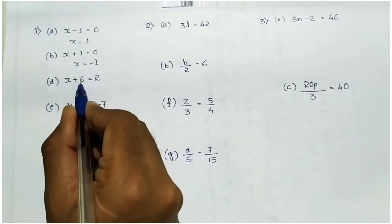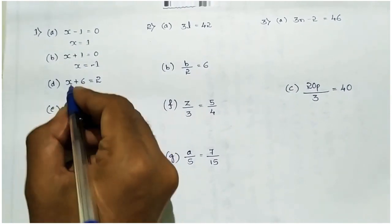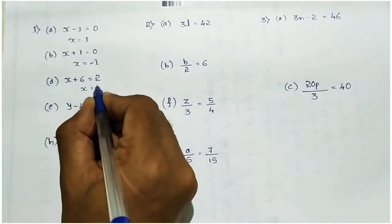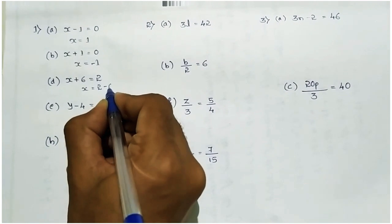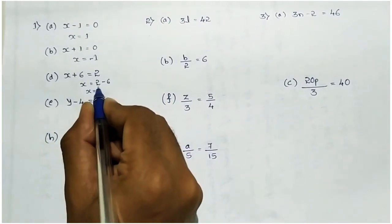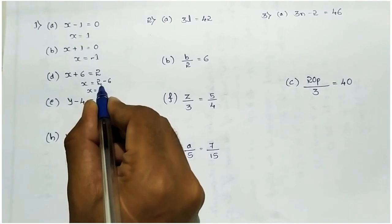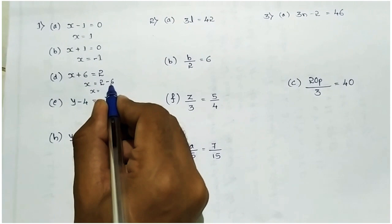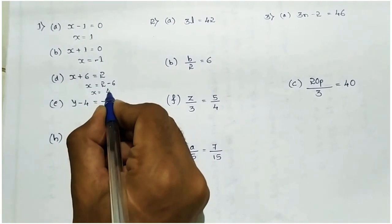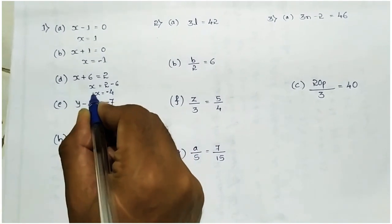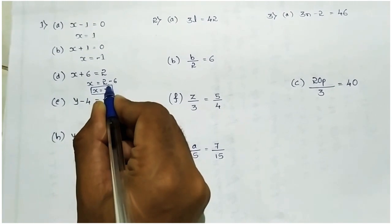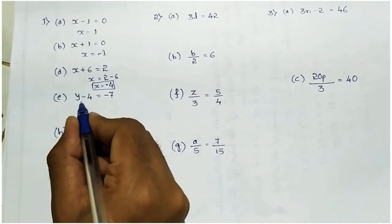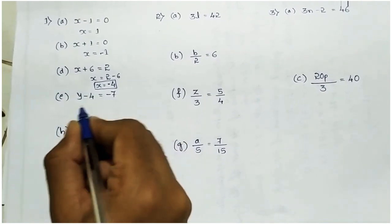Now x plus 6 equal to 2. Take 6 to the right side, it becomes minus, so 2 minus 6. It is not possible to subtract 6 from 2, so instead do 6 minus 2 which gives 4, but the bigger sign is minus, so x equal to minus 4.